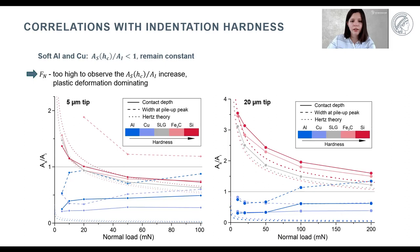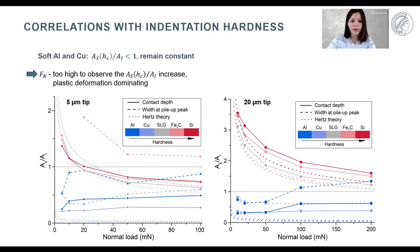For soft aluminum and copper, the contact area ratios remain constant and do not change substantially with normal load. There is also a possibility that the forces applied are simply too high and the plastic deformation is too extensive to observe hyperbolic behavior at the lowest normal force. Therefore, we only see a constant segment of the curve where scratch hardness remains substantially higher than indentation hardness.